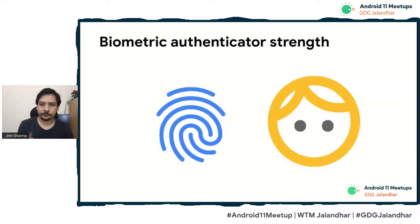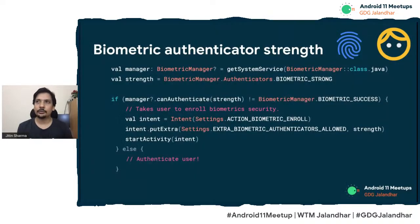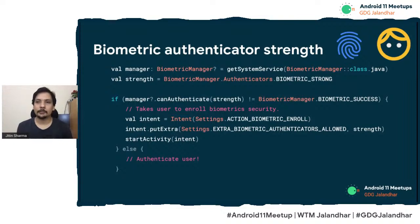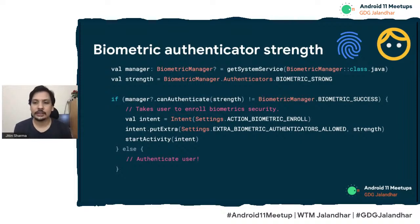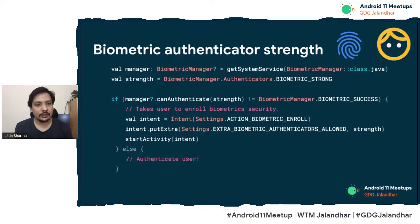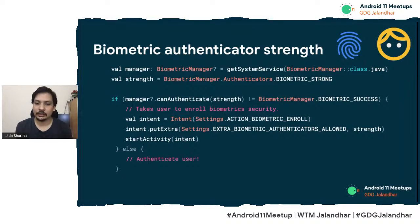Biometric authenticator strength is a way to know how much biometric security a user has enabled on their phone. This is really good for finance-related apps where you want to restrict access to certain areas. You can set a required strength from Authenticators — for example, BIOMETRIC_STRONG — and only allow that region of the app to be operable if the requirement is met. If not, you can prompt the user to enroll in biometric security (fingerprint or face recognition), after which they can access the protected area.